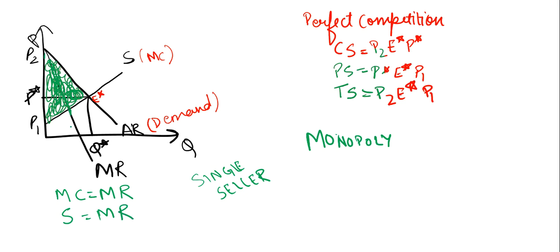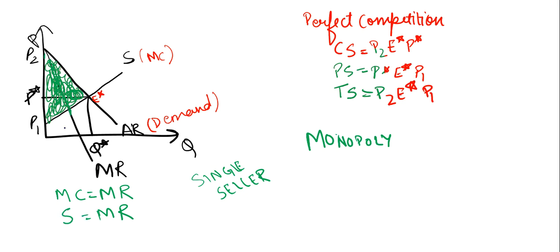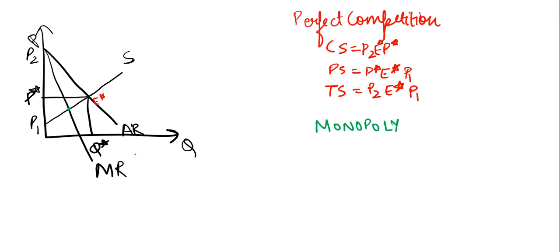As we can see here, the point where our marginal revenue equals our marginal cost is the intersection point. Our new equilibrium will be set at this point where our supply curve equals our marginal revenue curve. Let us name this point E1. This gives us our new equilibrium quantity, and the price is read off the demand line.